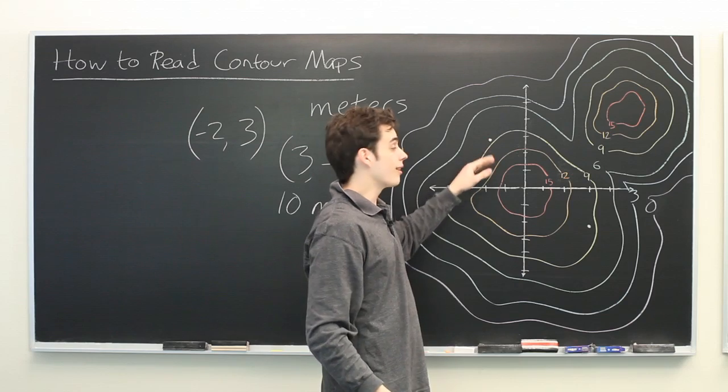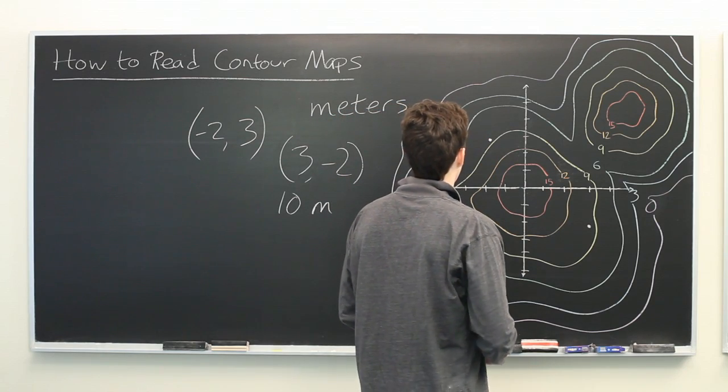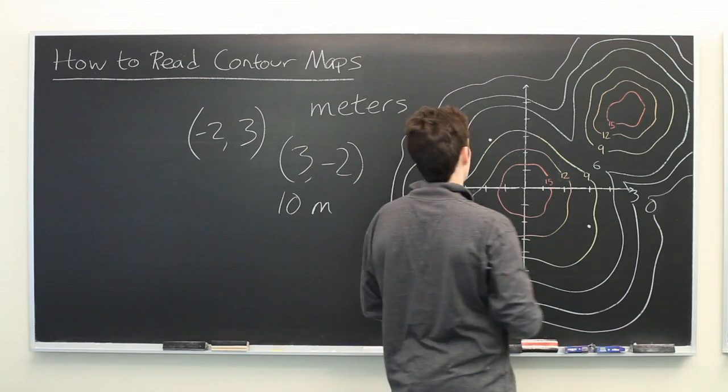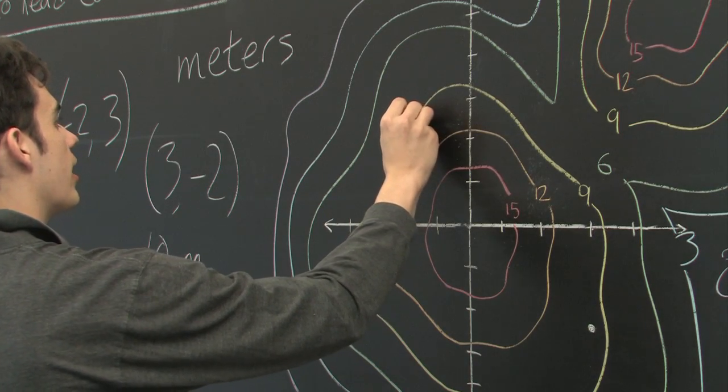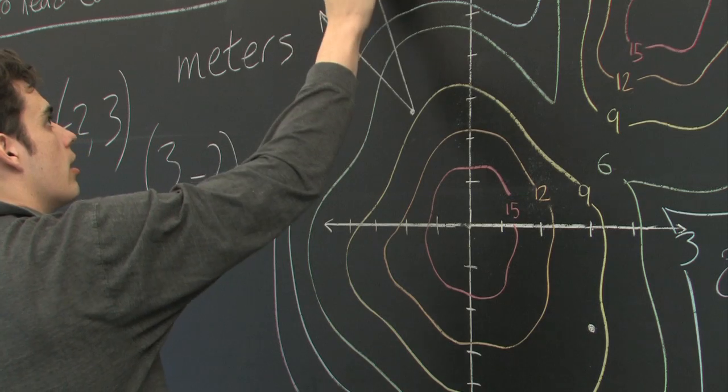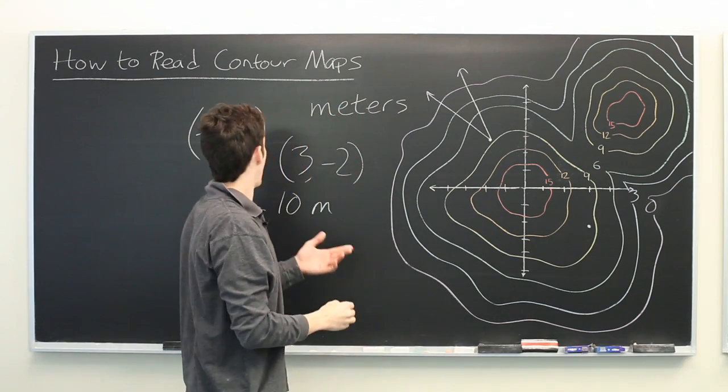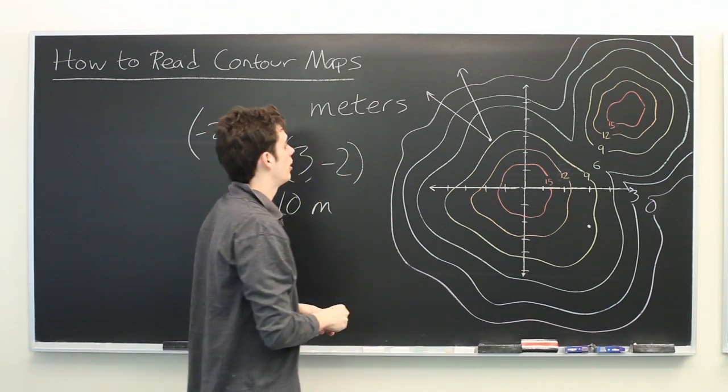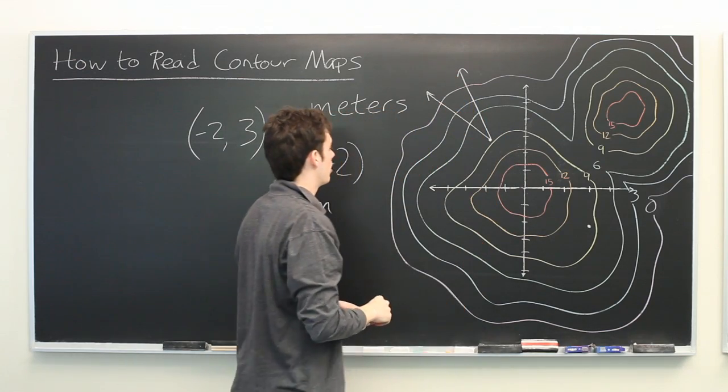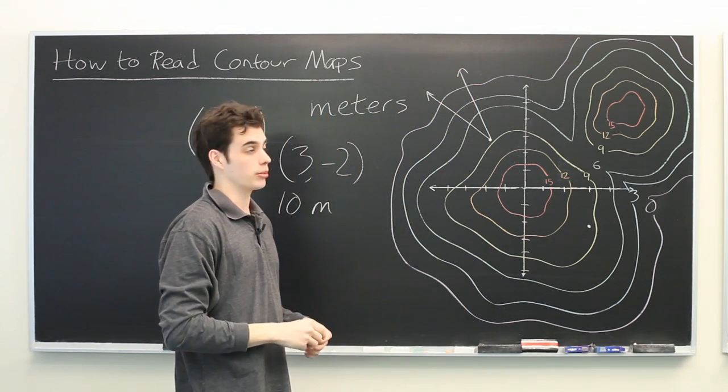We're very close to our 9 meter contour line, and we obviously want to move away from the peak if we're trying to travel downhill. So it looks like something like this. If you're at the point negative 2, 3, you would want to travel in a northwest direction in order to move down the hill as rapidly as possible.